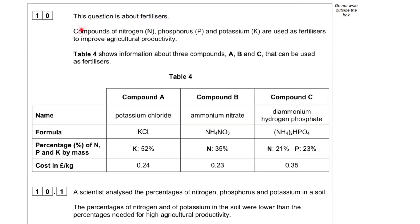Question 10. This question is about fertilizers. Compounds of nitrogen (N), phosphorus (P), and potassium (K) are used as fertilizers to improve agricultural productivity. Table 4 shows information about three compounds A, B, and C that can be used as fertilizers.